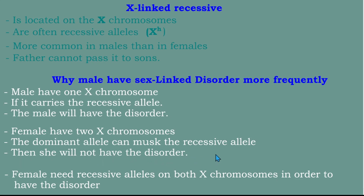A female carrying one recessive allele will not show the disorder but will be a carrier and may pass it to offspring. A female needs the recessive allele on both X chromosomes to have the disorder. This is how you write it during an examination: males have one X chromosome, so if it carries the recessive allele the male will have the disorder; females have two X chromosomes so the dominant allele can mask the recessive.